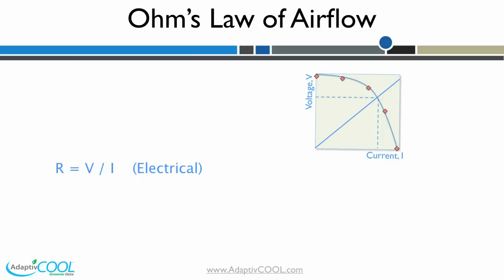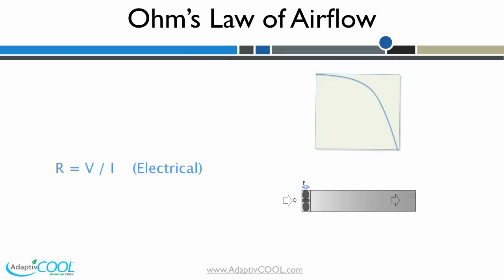This concept from the electrical domain can be used to understand pressure, volumetric flow, and impedance in the airflow domain. Consider a fan pushing air through a duct. This duct could be a 1U server with a small fan, or a data center with an underfloor plenum with large rack fans.